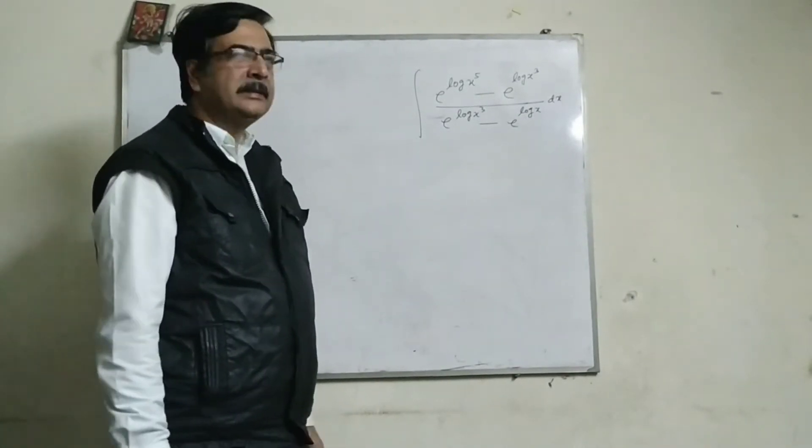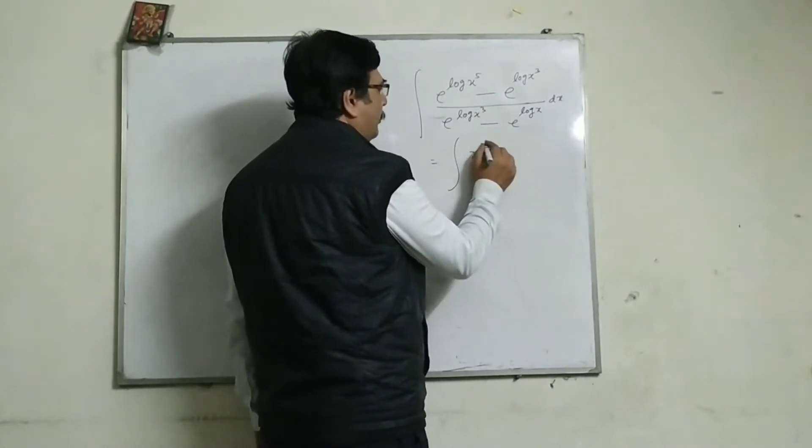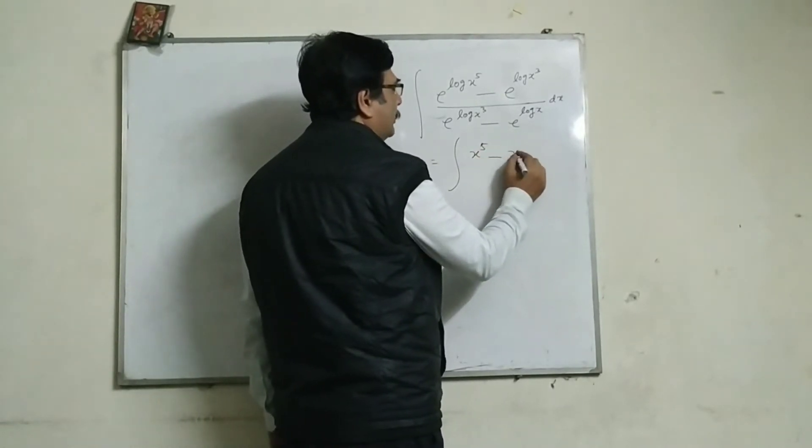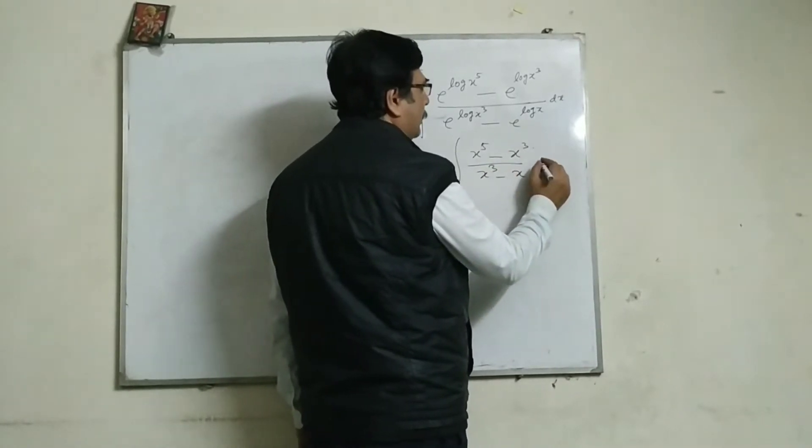Now, I did this in this way. This is x to the power 5 minus x to the power x cube by x cube minus x dx.